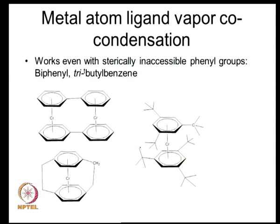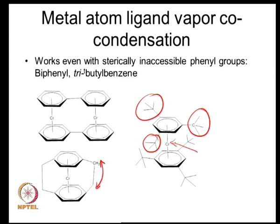Using the metal-ligand vapor co-condensation technique, you can also use sterically constrained ligands. Here are examples where the metal is sandwiched between two aromatic pi systems where the aromatic pi system is constrained either by an alkyl chain or by tertiary butyl groups — very bulky groups present on the aromatic ring system. Still, you have managed to push a chromium between the two ring systems. These are systems where you would have difficulty making these molecules with the traditional Fischer-Hafner synthesis, but using the metal vapor co-condensation technique, you generate the metal complex rather readily.